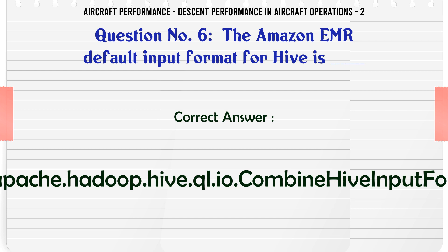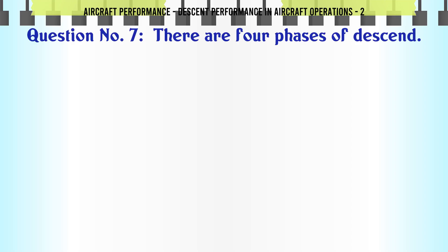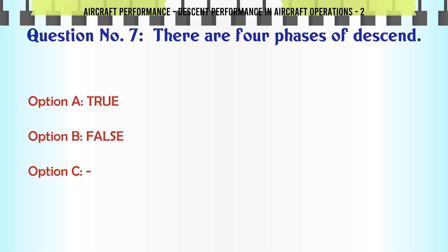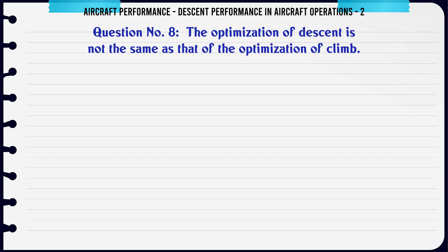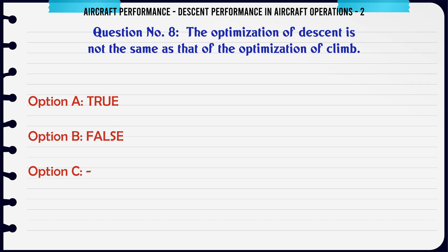There are four phases of descent. a) True, b) False. The correct answer is false.